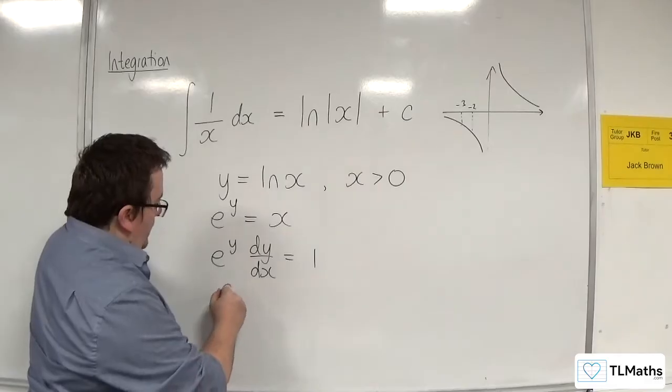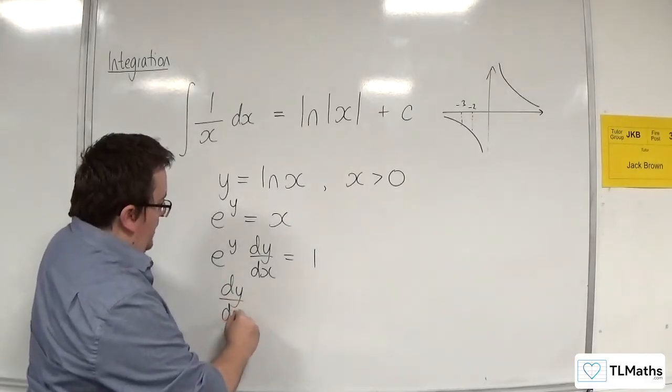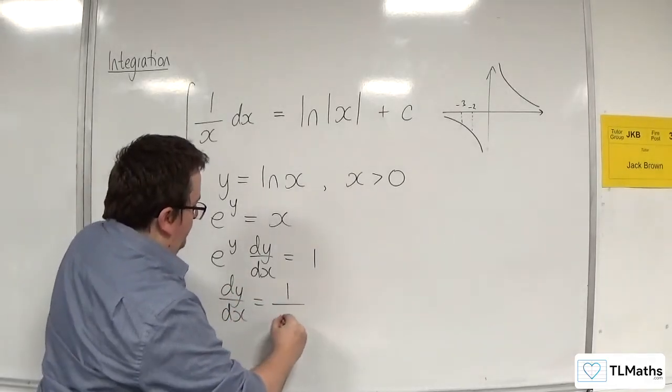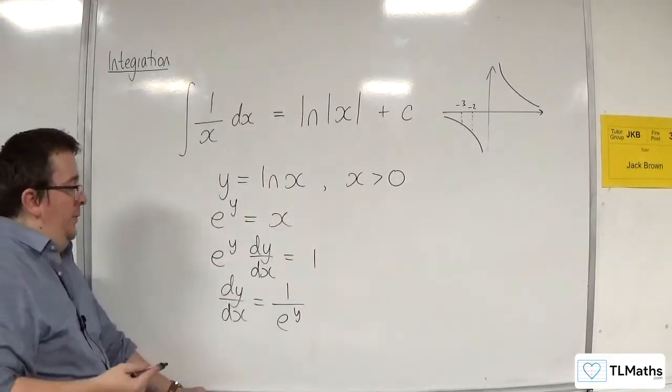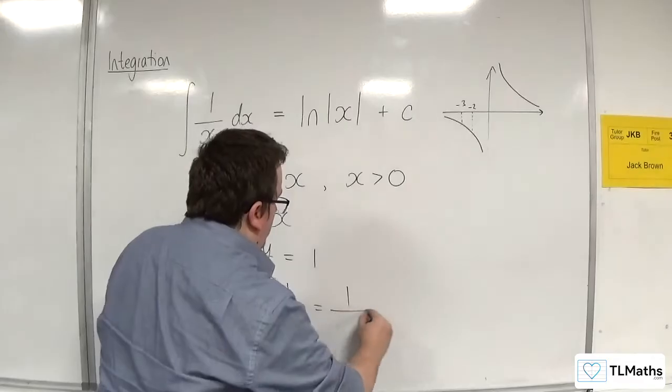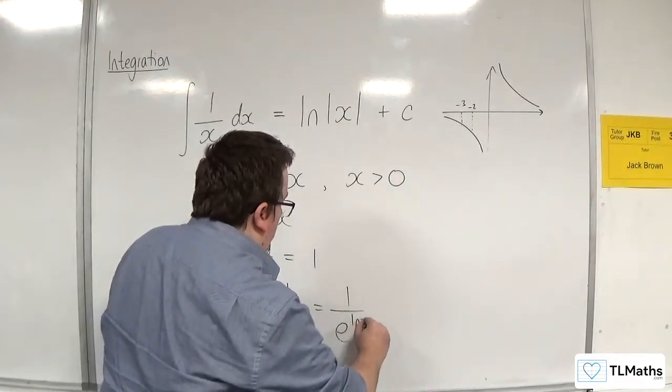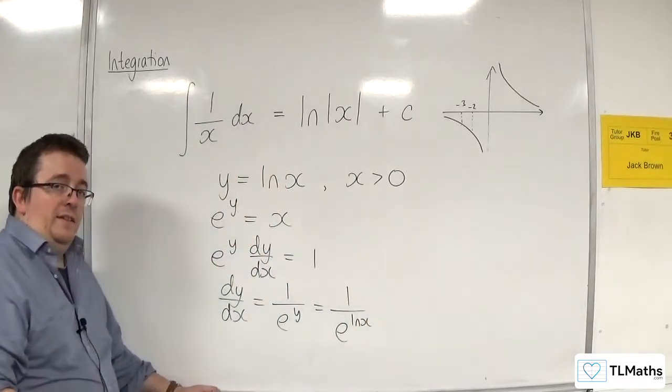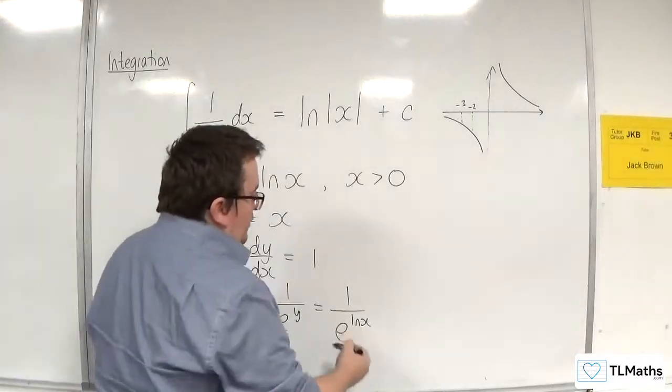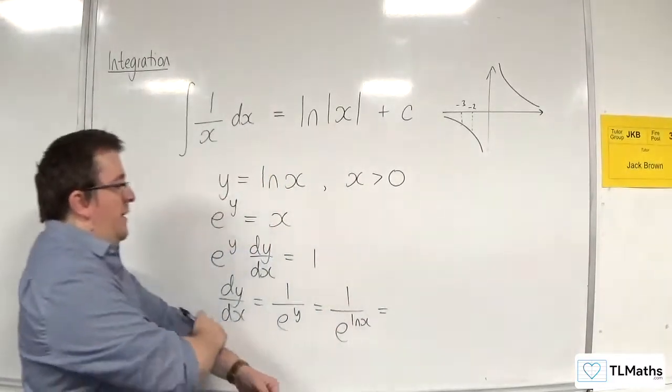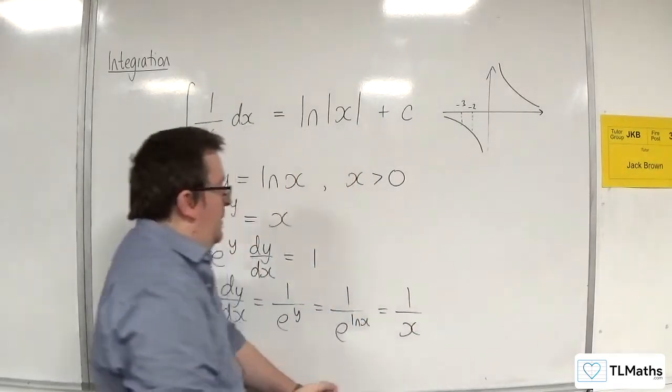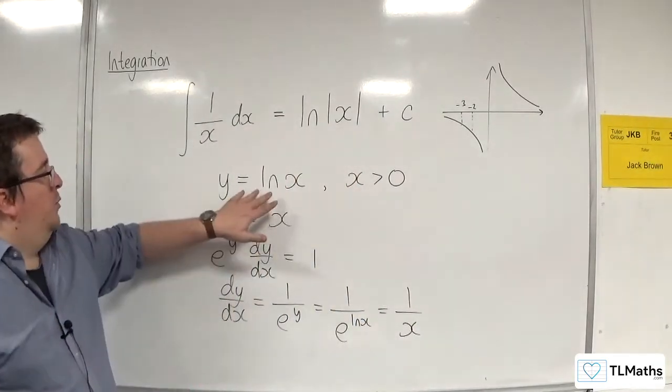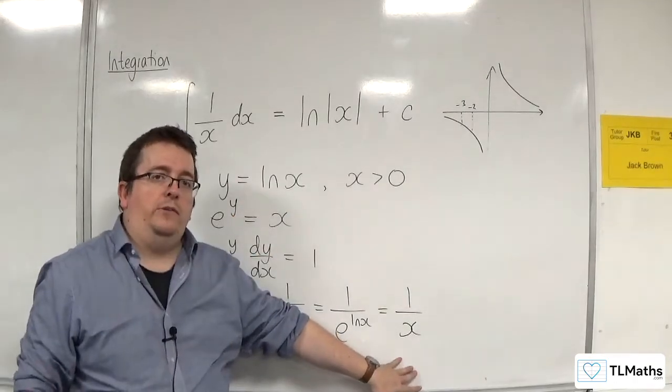Now, to get dy by dx, I am going to divide both sides by e to the y. And of course, what was y? Well, it was log of x. So that's 1 over e to the natural log of x. But what is e to the natural log of x? Well, the e and the natural log are inverse functions of one another. And so we just get 1 over x. So clearly, we can show that y equals log x differentiates to 1 over x.